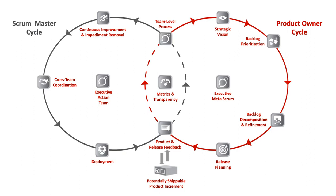Backlog decomposition and refinement goals are to break complex products and projects into independent functional elements that can be completed by one team in one sprint, capture and distill emerging requirements and customer feedback, and ensure all backlog items are truly ready so that they can be pulled by the individual teams. Release planning goals are to forecast delivery of key features and capabilities, communicate delivery expectations to stakeholders, and update prioritization as needed. Release planning may encompass one or many releases of the product to a customer and is a higher-level planning horizon than a single sprint, usually covering a period of one to six months.